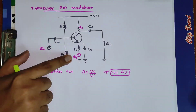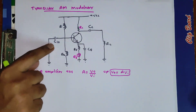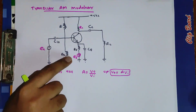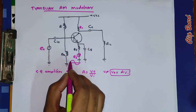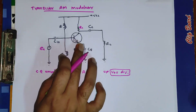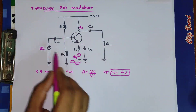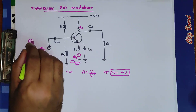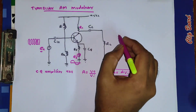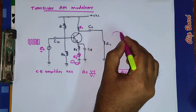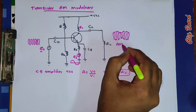Now if you consider the signal, the signal ES is part of the biasing circuit. The carrier signal is applied at the input. The signal ES is the instantaneous value of voltage changes; as ES changes, the biasing circuit changes, and so the gain changes. The output voltage is gain times input voltage, and the input voltage is the carrier voltage — a high frequency signal. So you will get an AM modulated wave across the load resistance.